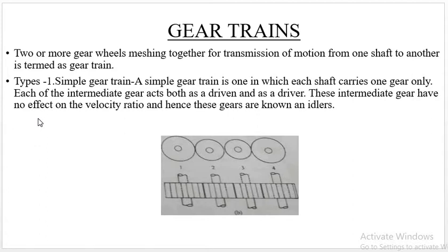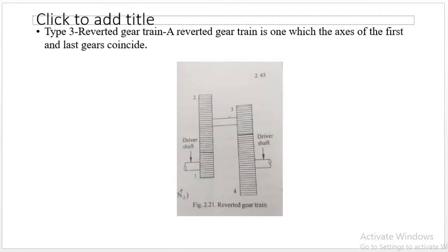Let's look at simple gear trains. In one shaft, we have one gear — this is a simple gear train. If we have this diagram, we can see the power transmission. The classification of gear trains is: simple gear trains, compound gear trains, and reverted gear trains.